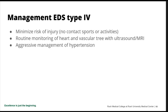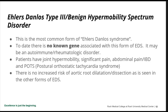This is a far more severe disorder than type 1. Management includes minimizing the risk of injury — these patients cannot play contact sports — routine monitoring of the heart and vascular tree with ultrasound and MRI, and very aggressive monitoring and management of hypertension. These patients are at significant risk of sudden death because of aortic dissection and need to be monitored very closely.